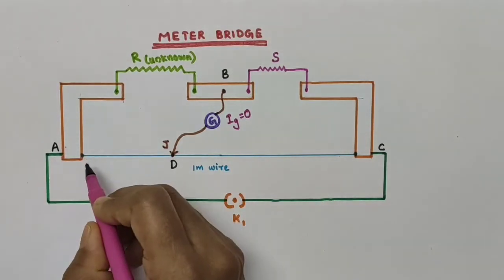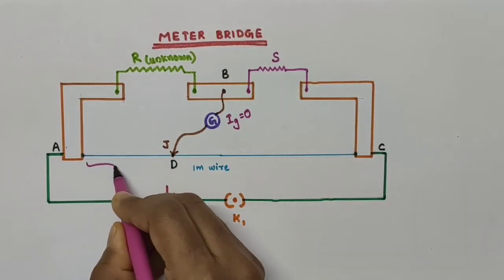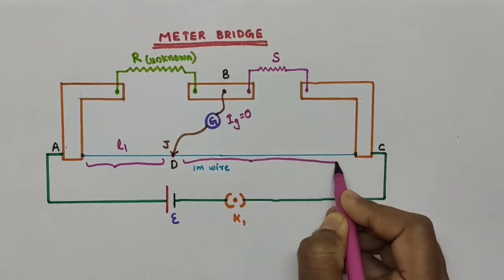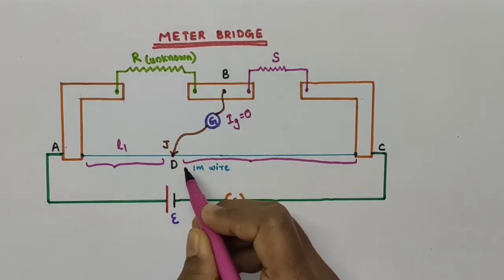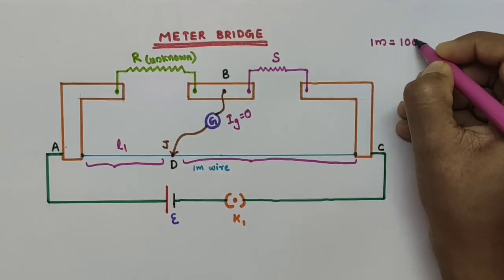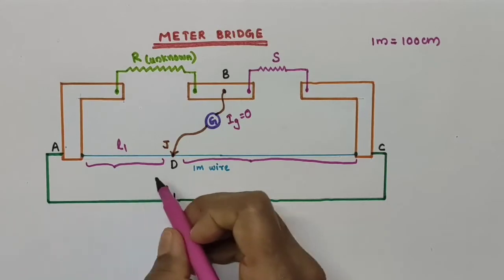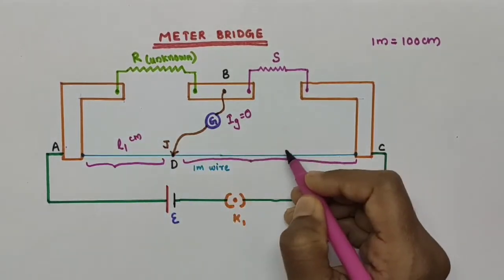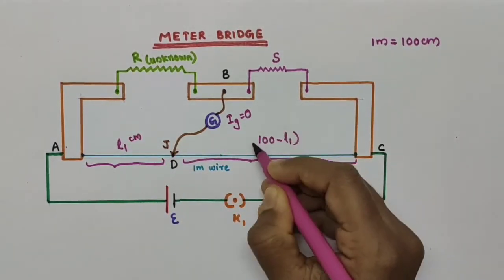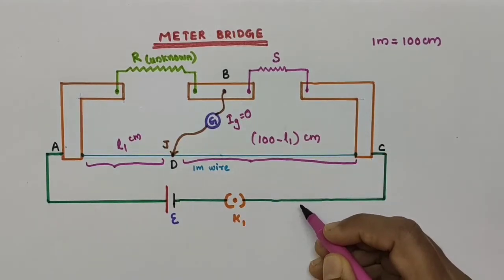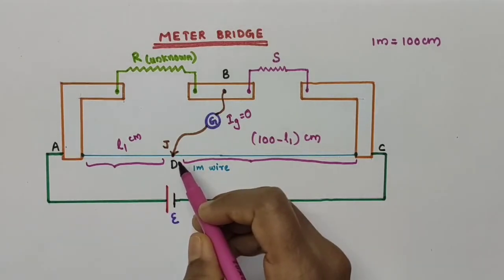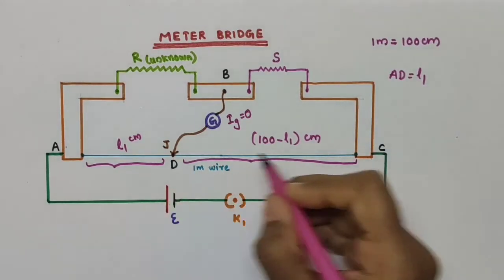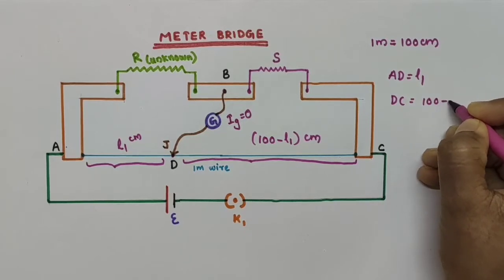Now let this length from A to D be L1. Then the length DC — since this wire is of length 1 meter, equal to 100 centimeter — if AD is L1 centimeter, then DC would be 100 minus L1 centimeter. So AD equals L1, and DC equals 100 minus L1.